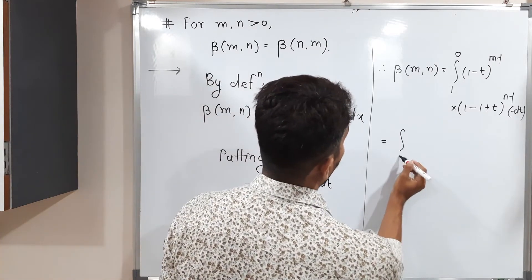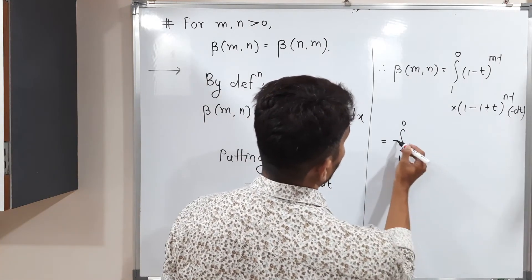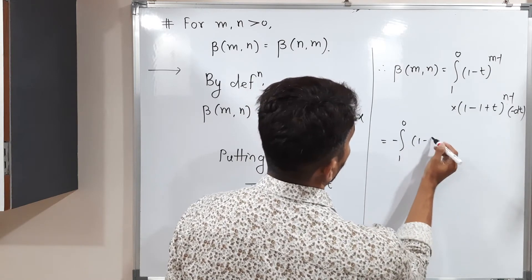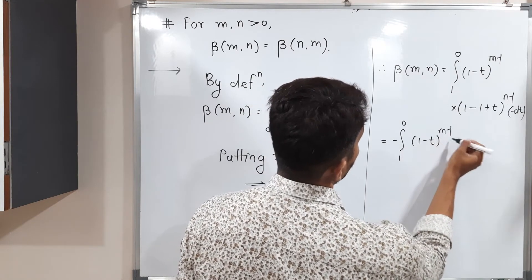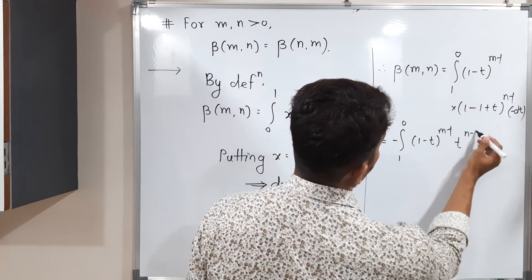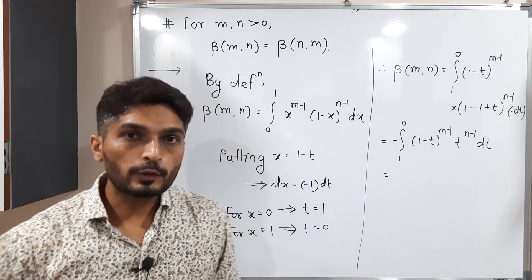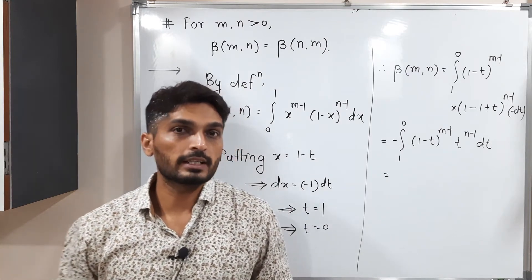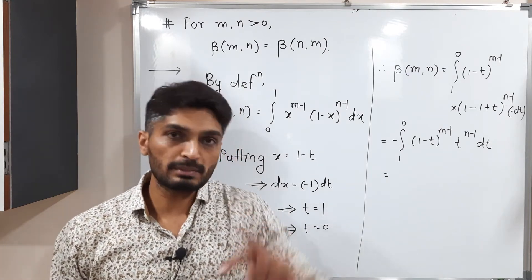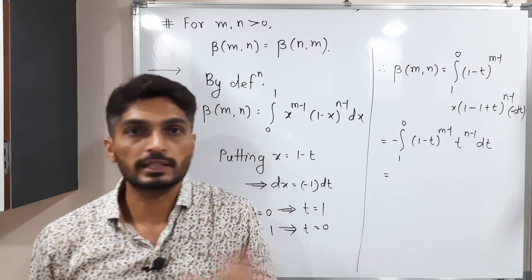This is equal to, 1 to 0, this minus sign will come outside. So 1 minus t raise to m minus 1, 1 minus 1 will get cancelled, t raise to n minus 1 dt. So are you familiar with the property of definite integration? If there is minus sign, simply change the limits of integration, the minus sign will get vanished.